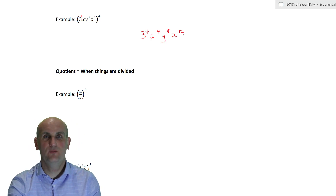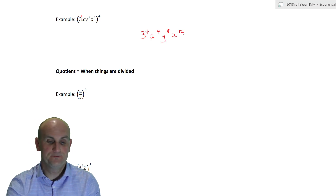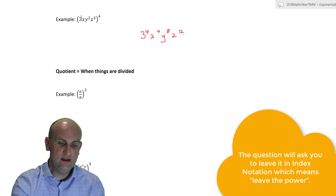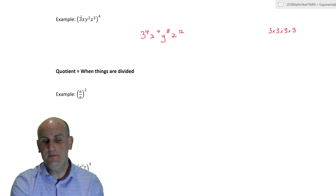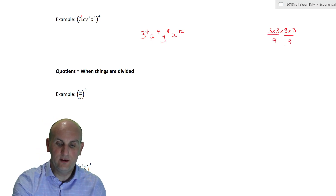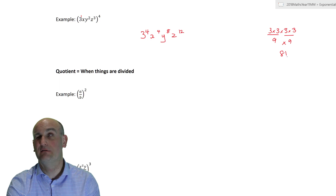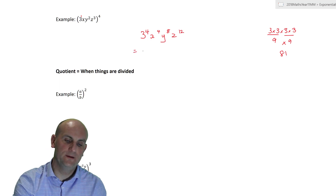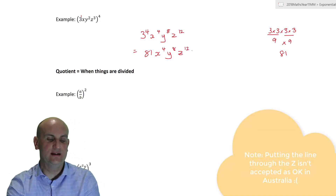Don't leave numbers as a power — expand them. Three to the power of four is three times three times three times three. A quick shortcut: three times three is nine, and three times three is nine, then nine times nine is 81. So the fully simplified form is 81·x to the four·y to the eight·z to the twelve.